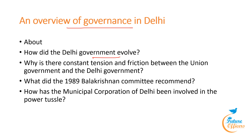At the commencement of the Constitution in 1950, Delhi was classified as a Part V State. Following state reorganization in 1956, it became a Union Territory governed by an Administrator. The Municipal Corporation of Delhi was established in 1958. The 69th Constitutional Amendment in 1991 created a Legislative Assembly and Council of Ministers for the NCT of Delhi. However, the Union Government retained control over public order, police and land, excluding these subjects from Delhi Government's jurisdiction. Constant tension arises due to legal disputes, control over key areas and administrative confusion.